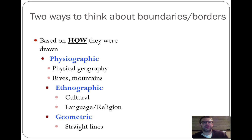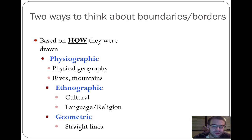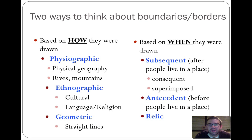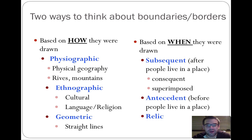When we think about boundaries, there are two frameworks: how and when. For how, we look at physiographic, ethnographic (sometimes called anthropographic), and geometric ways of defining boundaries. For when, we look at subsequent boundaries — which can be consequent or superimposed — as well as antecedent and relic boundaries. In the next couple of minutes we'll focus on both of these frameworks.